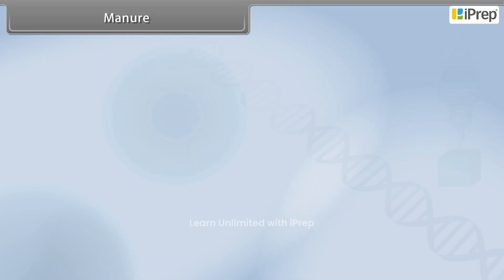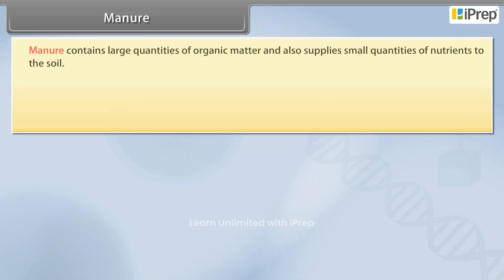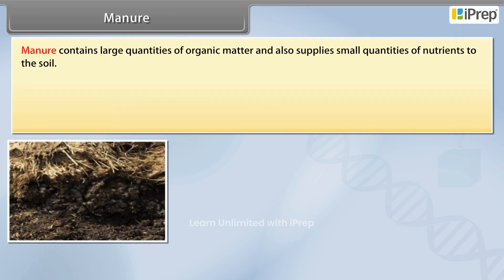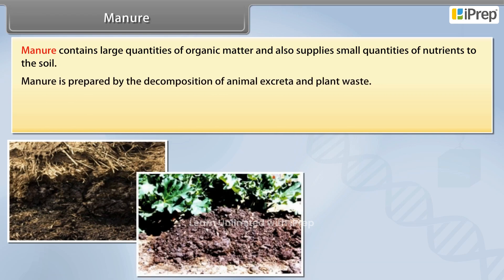Manure contains large quantities of organic matter and also supplies small quantities of nutrients to the soil. Manure is prepared by the decomposition of animal excreta and plant waste.